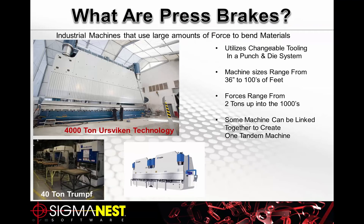A press brake is a large industrial machine that uses hydraulic force generating large amounts of tonnage to bend materials such as aluminum and steel. They utilize a changeable tool system — a punch-and-die style system, just like a turret press.